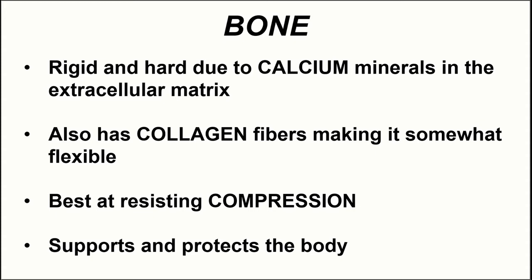Bone is a connective tissue that's rigid and hard due to the calcium minerals — particularly calcium carbonate and calcium phosphates — that are within the extracellular matrix. This is the first connective tissue we've seen that's embedded with minerals in its extracellular matrix. Bone also has an abundance of collagen fibers in it, so the collagen fibers give it some flexibility.